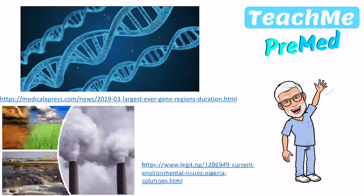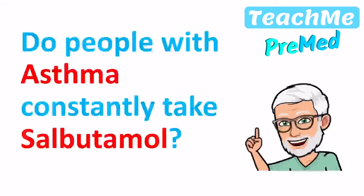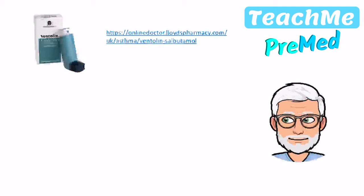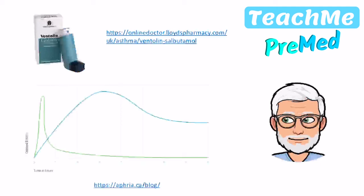Another great question is: if patients with asthma have more thickened airways and they're more likely to go into spasm, do people just continuously take salbutamol? Well, the first question is what does salbutamol do and how does it work? You've probably seen people — or may have it yourself — a blue inhaler. This is the salbutamol inhaler. The way that salbutamol works is it has a very quick onset, but a short duration of action. As you can see on the graph, you get a very quick onset but then it comes off very quickly. So if you were to just use salbutamol, you'd have to use it constantly, which isn't really feasible. So we use salbutamol as what we call a reliever.